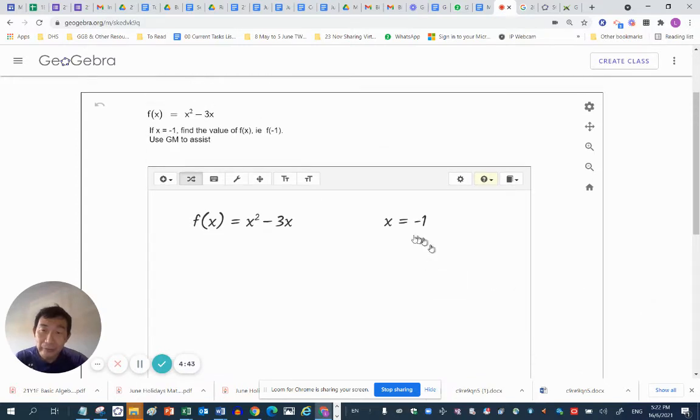Now, you notice that you're asked to use the graspable mass to assist in finding out the values of the function x squared minus 3x when x is minus 1. So, the notation is f of minus 1. How do we find f of minus 1 given this graspable mass canvas?